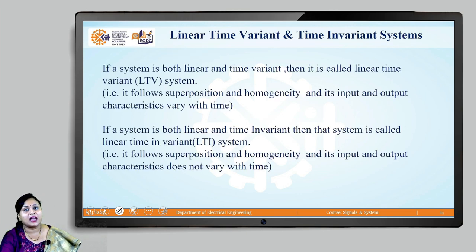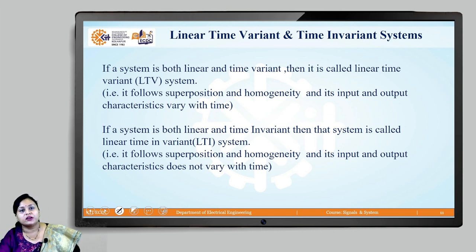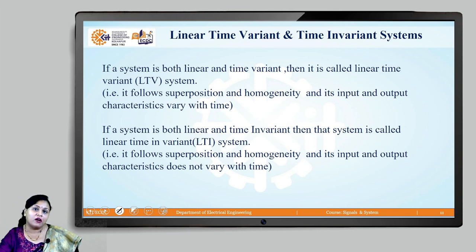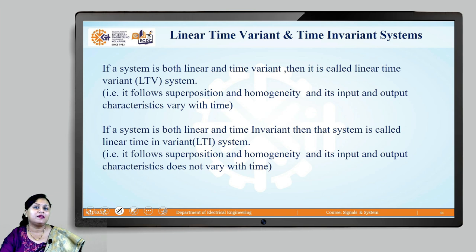Coming to linear time variant and time invariant systems — this is a combination of the first two cases. Linearity imposes that it should have superposition and homogeneity principles and its input and output characteristics should vary with time; such systems are called linear time variant systems. But for linear time invariant systems, it follows superposition and homogeneity, but the input and output characteristics will not vary over the period of time.